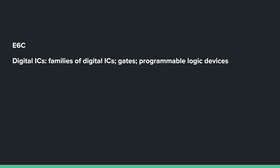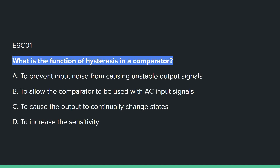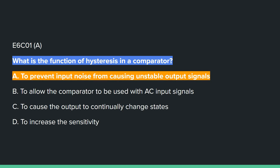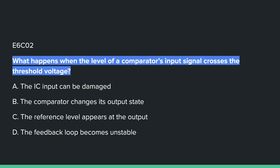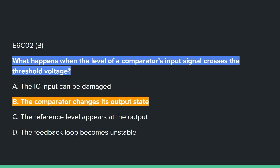E6C covers digital ICs, families of digital ICs, gates, and programmable logic devices. E6C01: What is the function of hysteresis in a comparator? A, to prevent input noise from causing unstable output signals. E6C02: What happens when the level of a comparator's input signal crosses the threshold voltage? B, the comparator changes its output state.